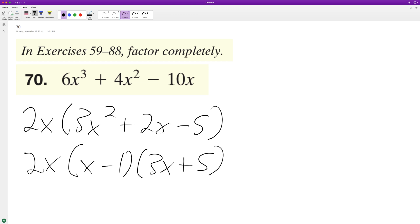So this looks like the full factorization, but we want to check it really quick. So 2x, and then we'll have 3x squared plus 5x minus 3x minus 5. Combine like terms, we get 3x squared plus 2x minus 5.